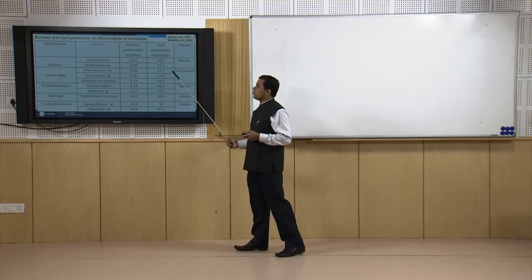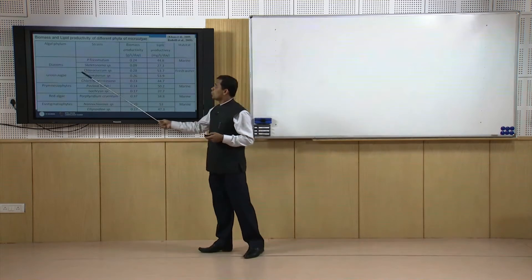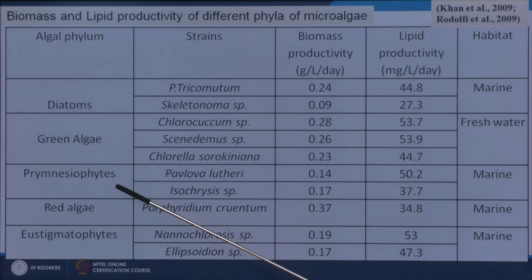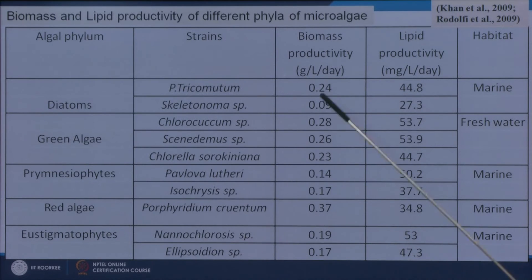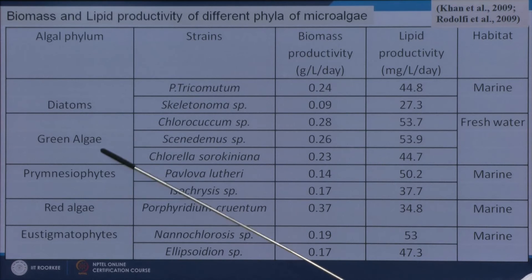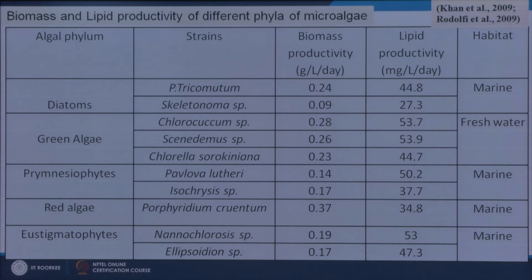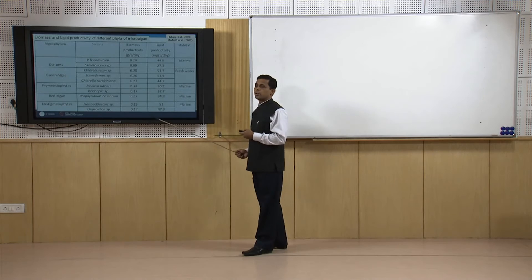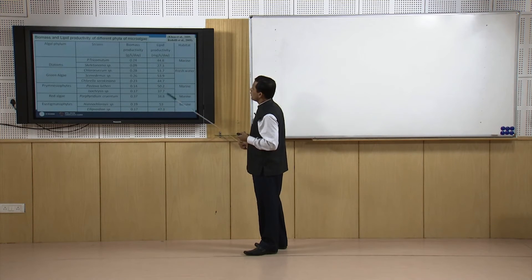This slide compares different algal phyla, their biomass productivity, and lipid productivity — covering diatoms, green algae, Prymnesiophytes, red algae, and Ochrophyta. Different strains are listed with varying biomass and lipid productivities. Some can be grown in marine water, some in freshwater — an advantage since algae can grow in all types of water, including wastewater. Maximum lipid productivity reported here is around 53.9 mg/L/day for green algae.